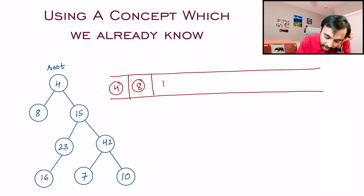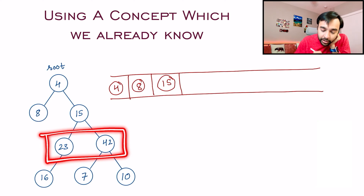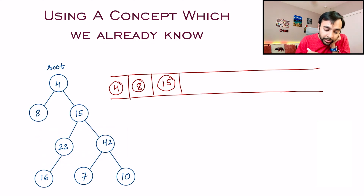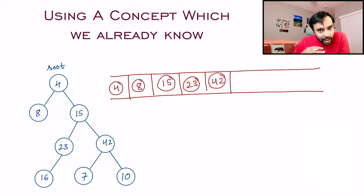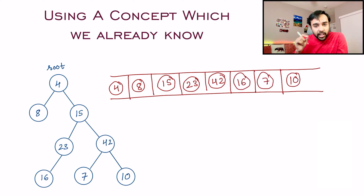Moving on, you look at the children of 8 — there are no children, so you move ahead. You pop 15 and then look at the children of 15; you see 23 and 42, so you add these elements to your queue as well. This is how the level order traversal actually works.